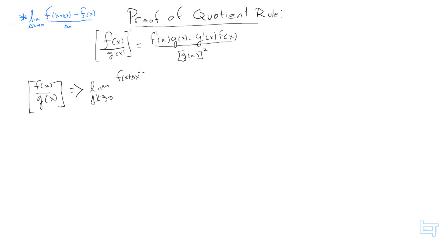So f of x plus delta x minus f of x, but then there's also g of x — it's over g of x plus delta x minus g of x. But then the definition of a derivative is still not done yet; we still need to put the whole thing over delta x.